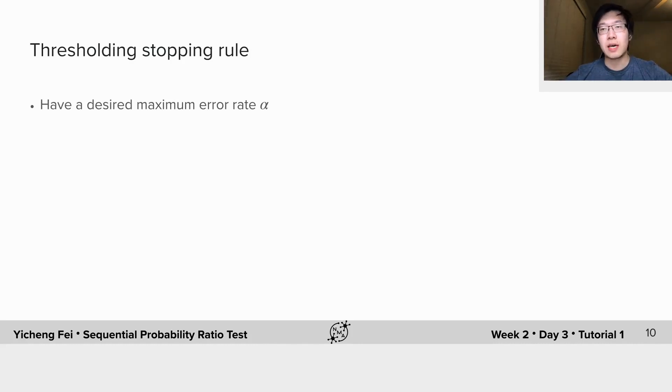Previously we've mentioned that the thresholding stopping rule should be used if we want to reach a desired confidence level. Here I will show the relation between accumulated evidence and the confidence level.